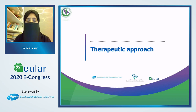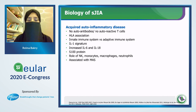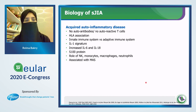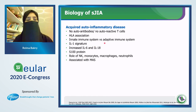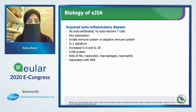Now the therapeutic approach and updates in systemic JIA. Systemic JIA is still under the umbrella of juvenile idiopathic arthritis, but it is also part of the acquired autoinflammatory diseases. Autoantibodies and autoreactive T cells have no major role in its pathogenesis. Studies show HLA association in systemic JIA. The innate immune system shows increases in IL-6, IL-18, and S100 protein, and natural killer cells, monocytes, macrophages, and neutrophils play a major role in the pathogenesis of systemic JIA.